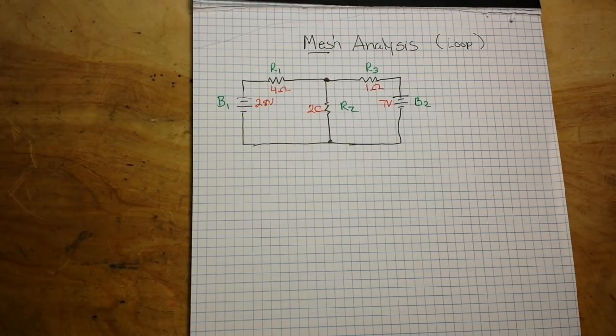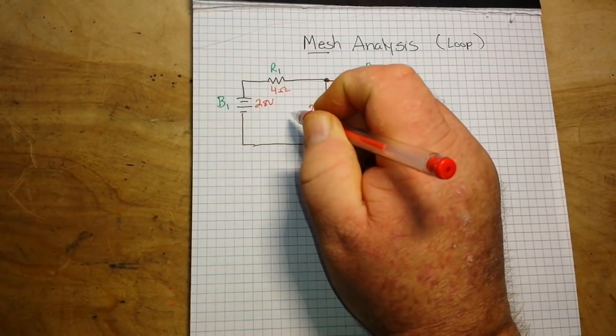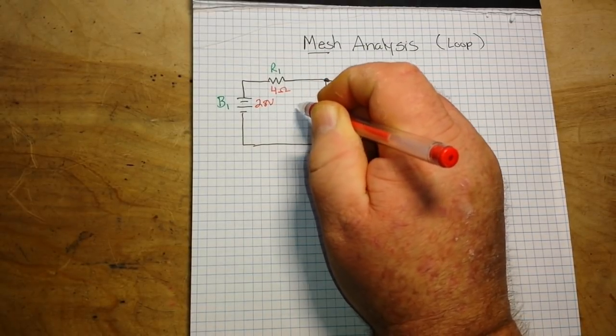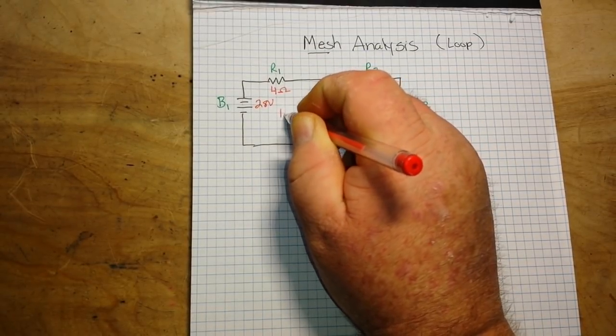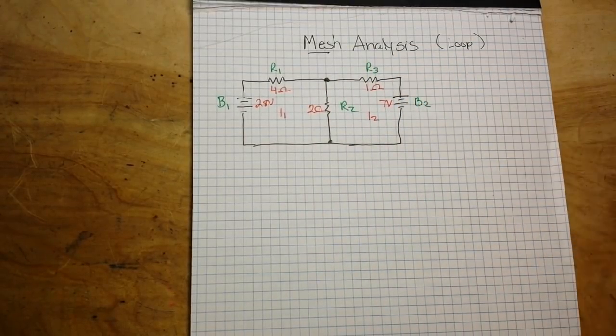The first step in our mesh current analysis, and the reason it's sometimes called loop current analysis, is we have to envision where the current loops are. So we'll call this over here current loop I1 and this will be current loop I2.